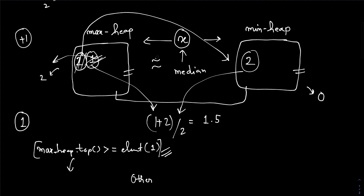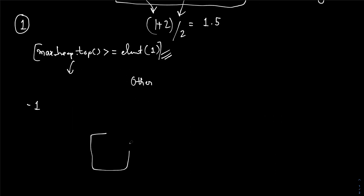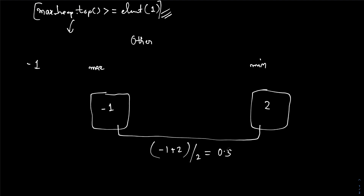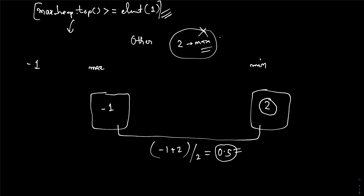The next element is -1. Our max heap is null and our minimum heap contains 2. So we push -1 into the max heap. Now we find the median at this point: it's (-1 + 2) / 2 = 0.5. Now we have to remove 2. I check if 2 is present in the maximum heap — the max heap's top element is less than 2, so it must be present in the minimum heap. So I remove it from the minimum heap. We follow all these steps similarly.